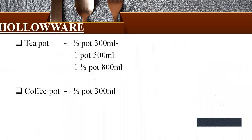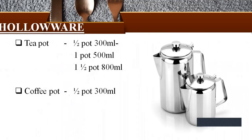Hollowware is an article which is hollow in shape, such as a teapot, coffee pot, and entre dish. Teapot sizes: half pot is 300 ml, one pot is 500 ml, one and a half pot is 800 ml. Coffee pot half pot is 300 ml. Here you can see the picture of teapot and coffee pot.